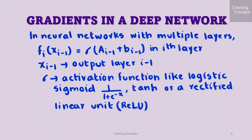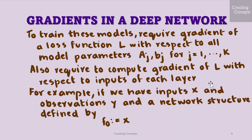Here x i-1 is the output of layer i-1, and sigma is an activation function such as the logistic sigmoid — that is 1 by 1 plus e raised to minus x — tanh, or a rectified linear unit which is ReLU. In order to train these models, we require the gradient of a loss function L with respect to all model parameters aj, bj where j varies from 1 to k.